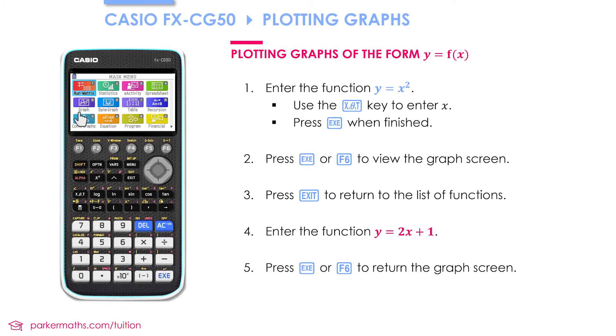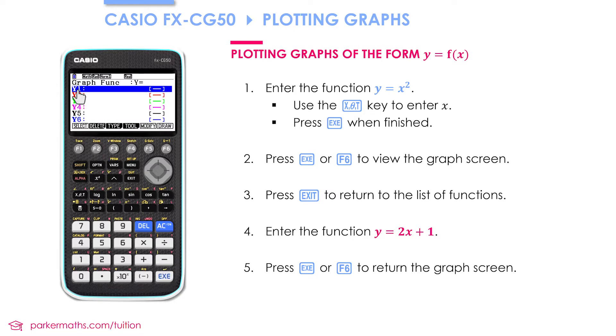So from the main menu I'm going to go into graph mode which is number 5. I'll do that using the directional arrows. If you've reset your calculator you won't see any functions in here yet. The blue bar tells us which line is currently selected.